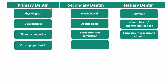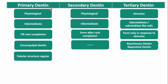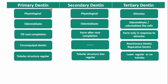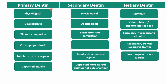Primary dentine is also called circumpulpal dentine, while tertiary dentine is known as reactionary or reparative dentine. Regarding tubular structure: primary dentine has regular tubules, secondary dentine has less regular tubules, and tertiary dentine has the least regular tubules or no tubules at all. Primary dentine is deposited equally around the pulp chamber; secondary dentine is deposited more at the roof and floor; and tertiary dentine is deposited only in a localized area just below the stimulus.